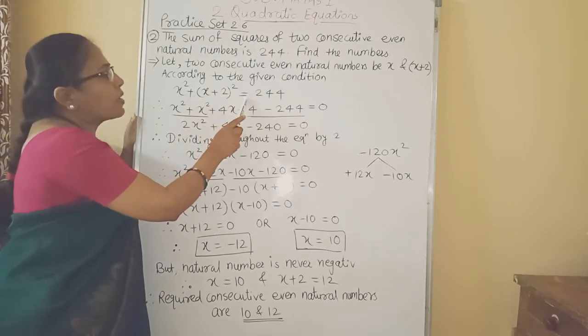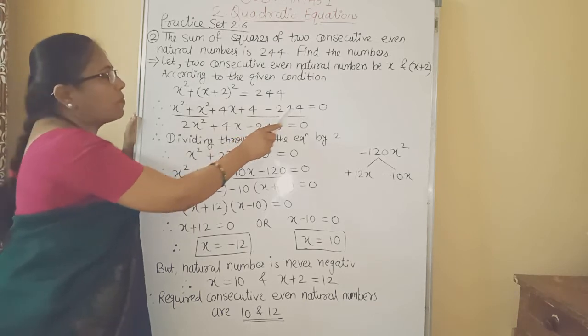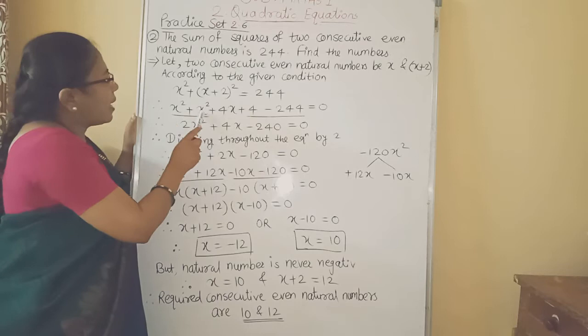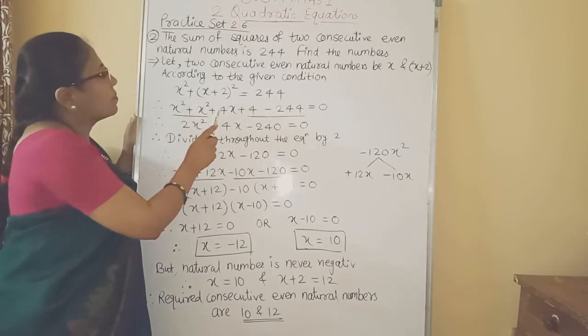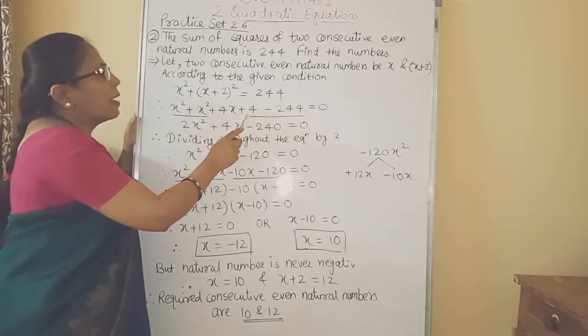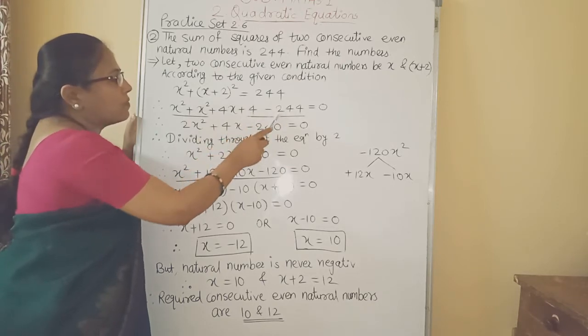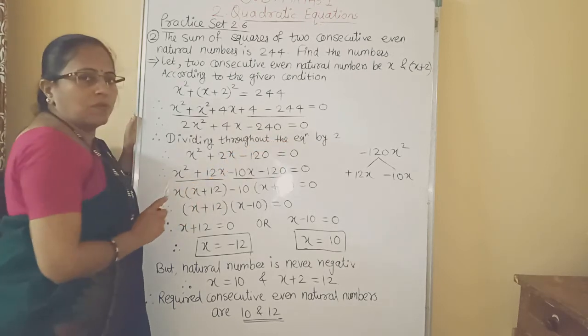Then this 244 we will take on the left hand side minus 244 equal to 0. Now x square plus x square equal to 2x square plus 4x plus 4 minus 244. We have to do subtraction we will get minus 240 equal to 0.